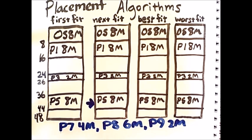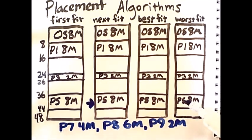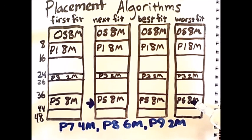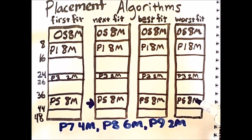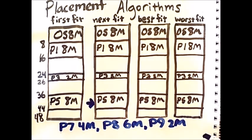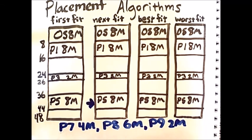Best fit scans all empty slots in memory and finds the placement of the process that will lead to the least amount of external fragmentation within that one particular chunk of memory. In other words, it tries to find the chunk of memory that will fit the process best. In contrast, worst fit tries to find the chunk of memory that fits the process worst. This means it stores the process in the largest contiguous empty chunk of memory that can store the process.